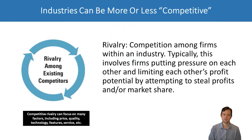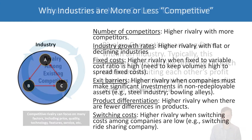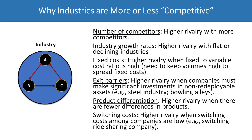First of all, industries can be more or less competitive. Competition among firms involves companies putting pressure on each other and trying to limit each other's profit potential by attempting to steal customers and market share, which limits the profits of other firms. Why are industries more or less competitive? First, the number of competitors in the industry — you'll have higher rivalry with more competitors.